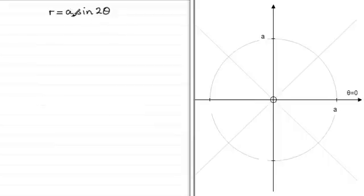Now a is a positive constant and we know that r has got to be positive. Sine of any angle will go between minus 1 and 1.